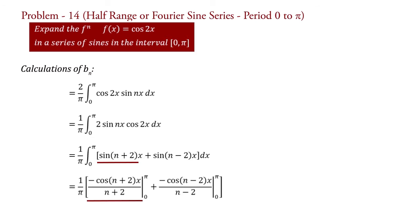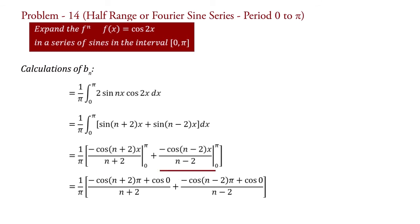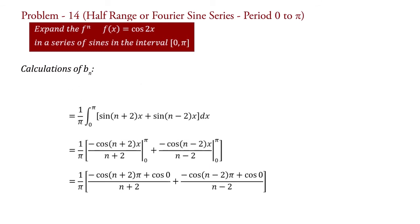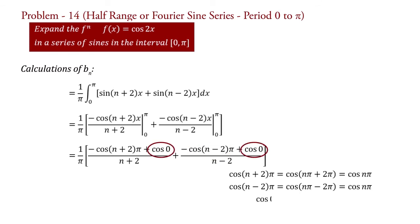This first term is the integration of sin((n+2)x) and this second term is the integration of sin((n−2)x). Putting the value of limits, b_n = (1/π) into [−cos((n+2)π) + cos(0)]/(n+2) + [−cos((n−2)π) + cos(0)]/(n−2). Since cos((n+2)π) = cos(nπ + 2π) = cos(nπ), and cos((n−2)π) = cos(nπ − 2π) = cos(nπ), and cos(0) = 1.